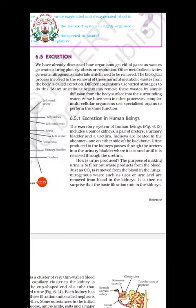Lungs are one kind of excretory organ because they help in the excretion of carbon dioxide. Plants also expel carbon dioxide produced during respiration through their stomata. Various harmful materials are formed due to metabolic activities in living organisms, and it is essential to remove them, otherwise they will be harmful to the body. The process involving removal of waste or harmful metabolic waste from the body is called excretion.